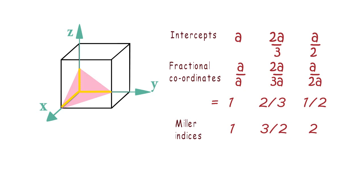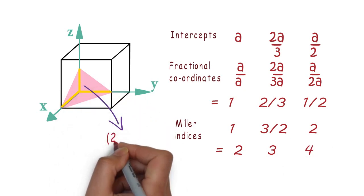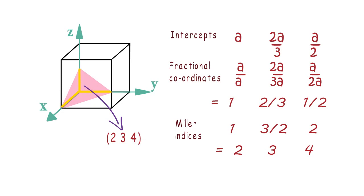Since all the three values are not integers here, so multiply all these three values with 2, which is the LCM of all three denominators. So we will get Miller Indices as 2, 3, and 4. So this plane is represented by (2 3 4).